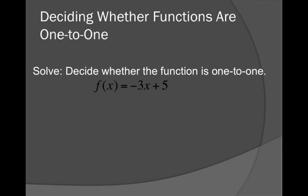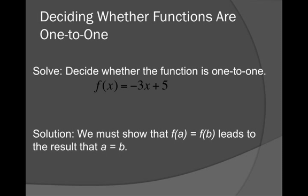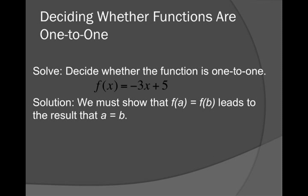Let's go through how you are going to figure out whether or not a function is one-to-one. So here we have f(x) = -3x + 5. Is the function one-to-one? We must show that if two y's are equal, then we're going to get that the x's are equal.